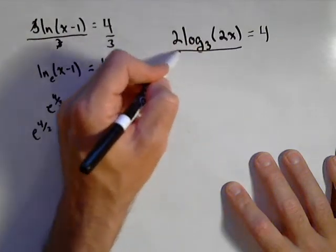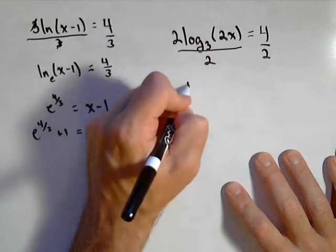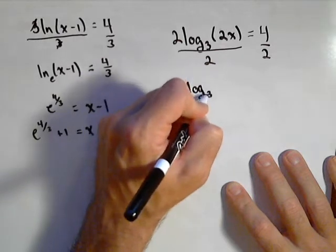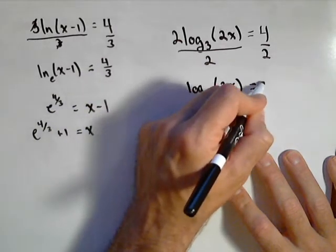First step would be to divide both sides by 2, and I get log base 3 of 2x equals 2.